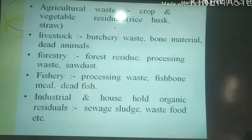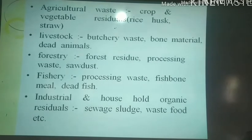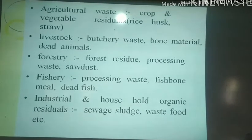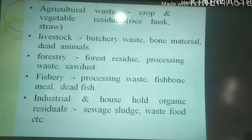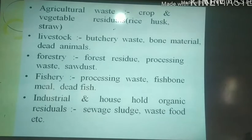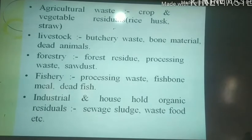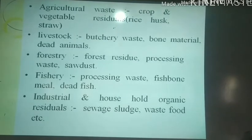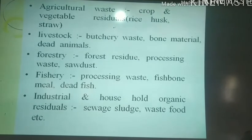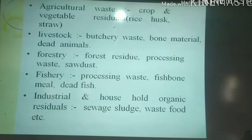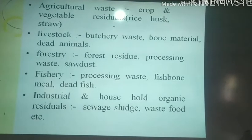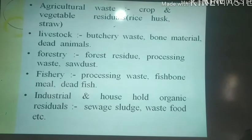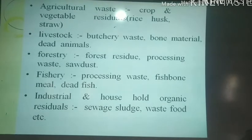Types of biomass include agricultural waste such as crop and vegetable residues, rice straw; livestock such as butchery waste, bone material, and dead animals; forestry residue including processing waste and sawdust; fishery processing waste such as fish bone meal and dead fish; and industrial and household organic residues such as sewage sludge, etc.